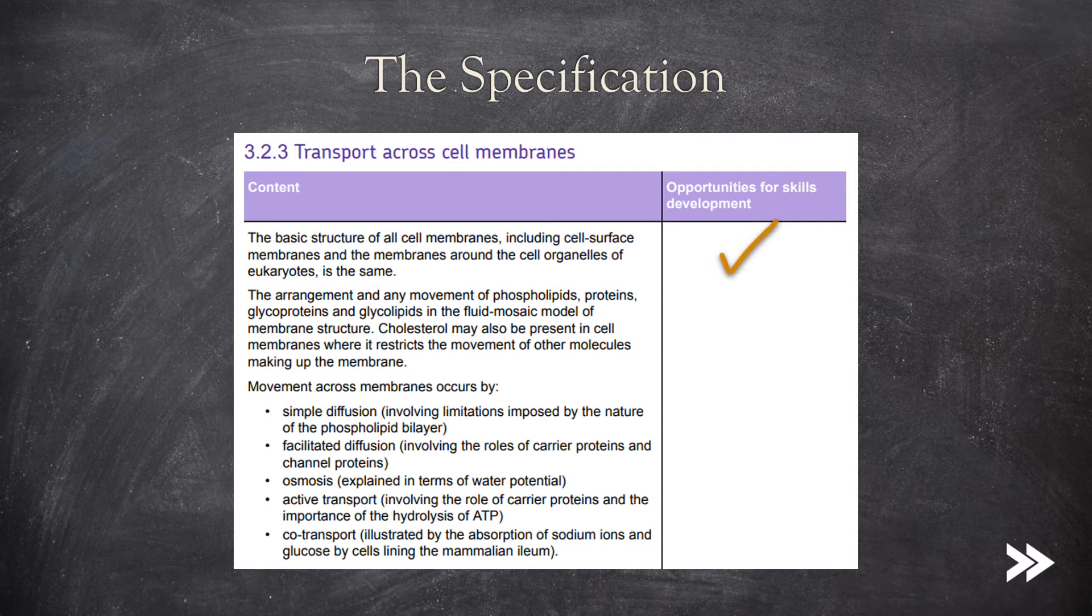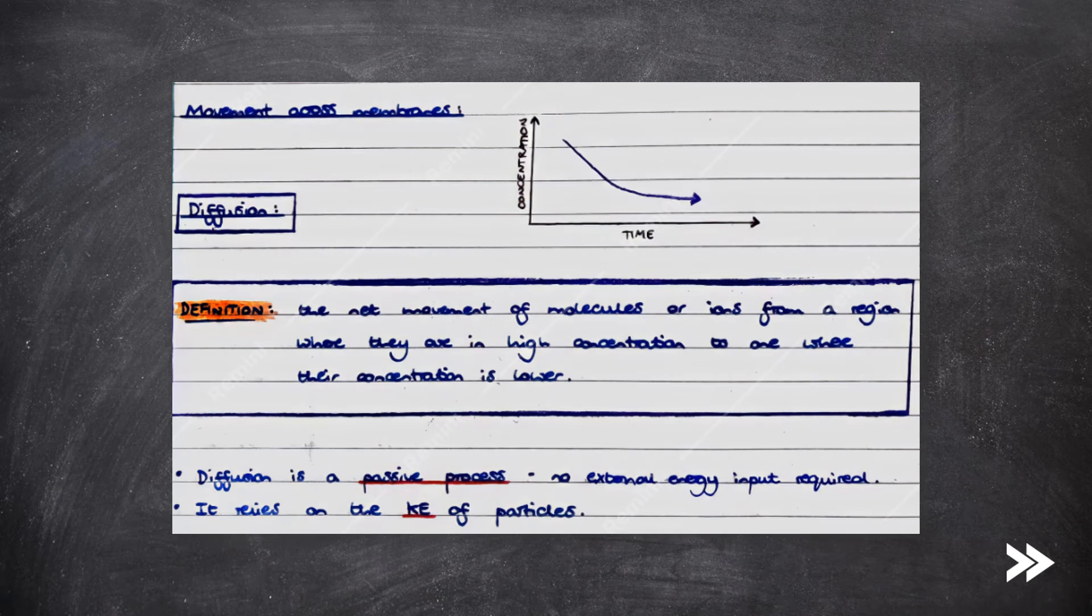Great. So now we've had a look at the basic structure of cell membranes and also the various roles that the different components found within membranes have. So next, we'll look at how substances may move across these membranes.